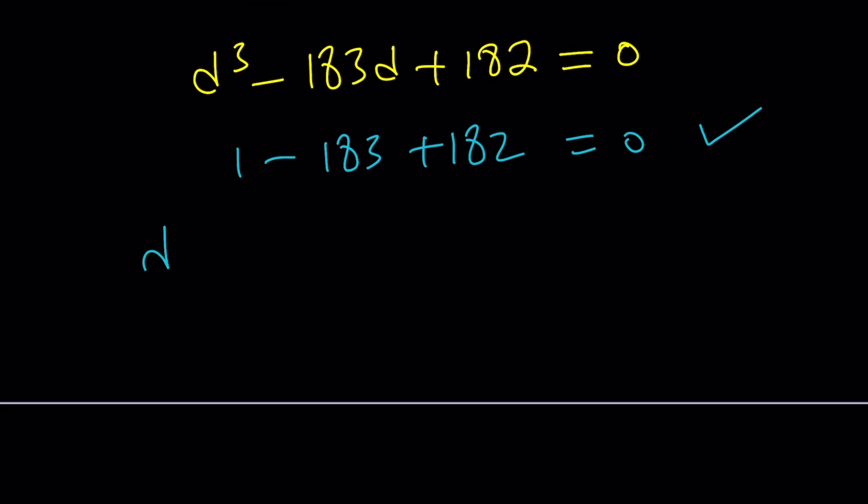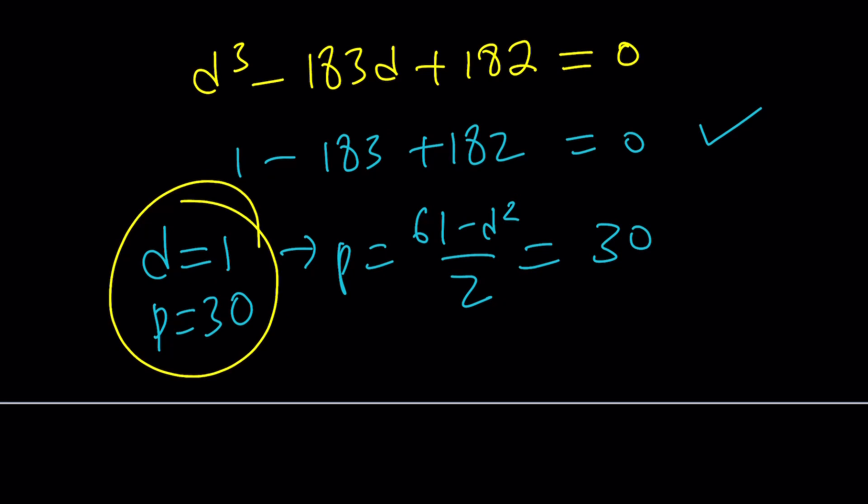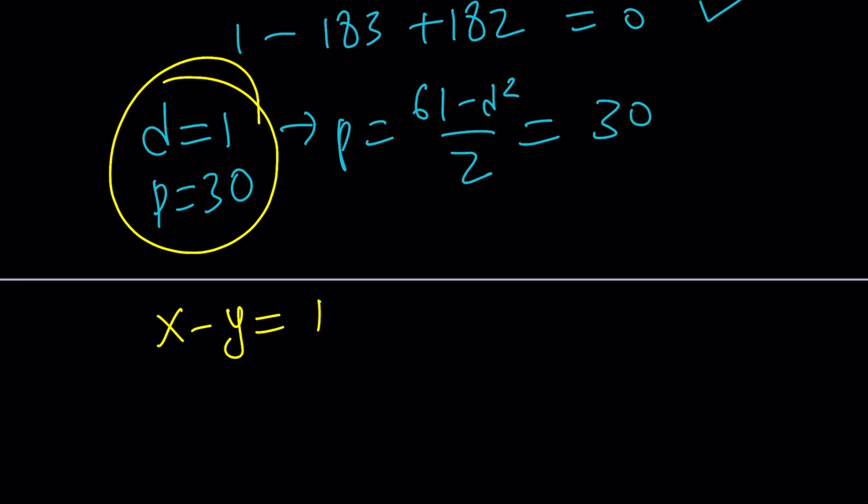Let's go ahead and use it to find p. p is given by 61 minus d squared divided by 2. So 61 minus 1 is 60 divided by 2 is 30. So we now know the difference of these two numbers and their product. Can we find the numbers? Absolutely. Let's go ahead and back substitute. What does d mean? d means x minus y and p means x times y. How do you solve this? You could probably guess and check. And there's going to be two pairs. But let's go ahead and do it algebraically again.